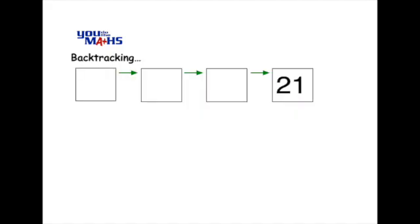If we pretend that the first box on the left hand side is the letter n, we applied 3 operations to the letter n and they're shown with green arrows and the result was 21.